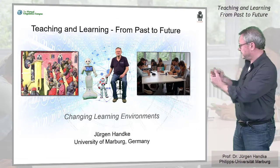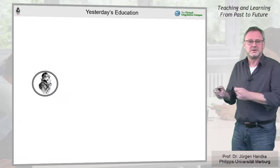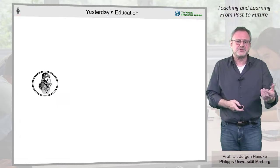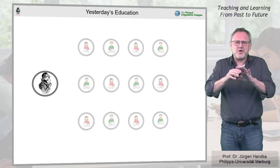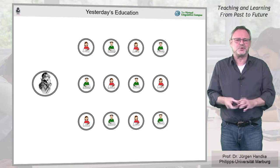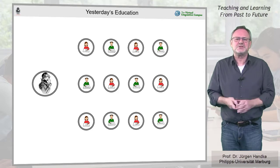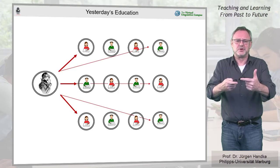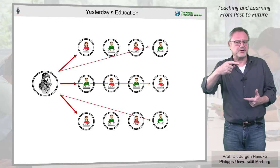The past looked like this: the teacher at the front and the learner staring at him from perfectly arranged seats and rows. Content delivery was unidirectional, from teacher to learner.